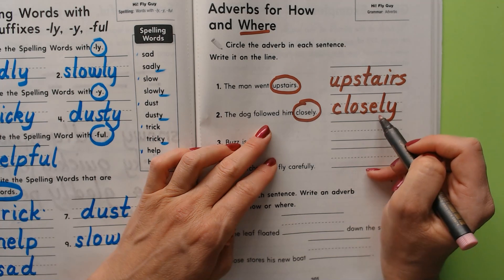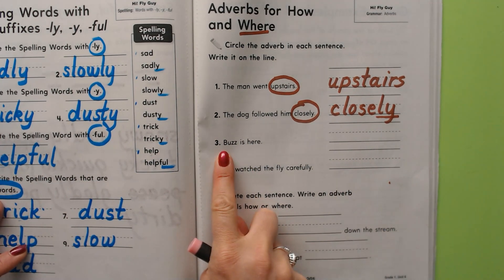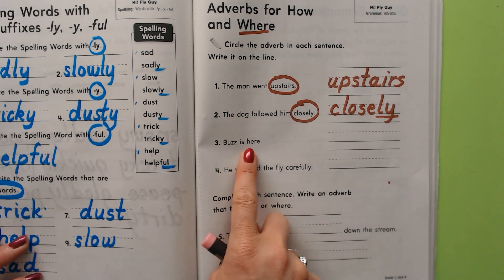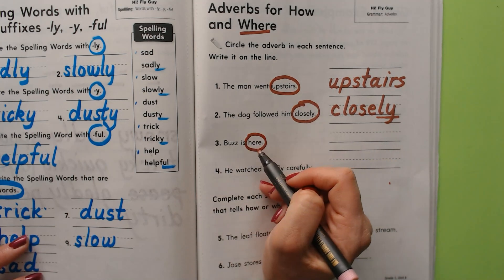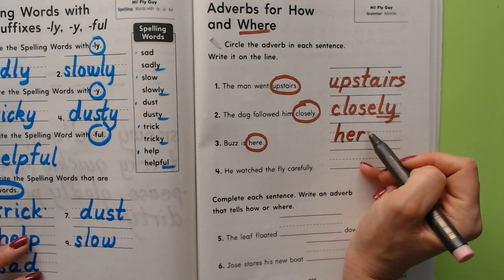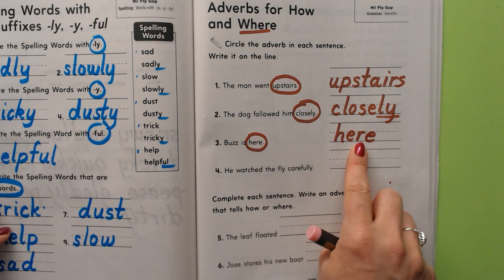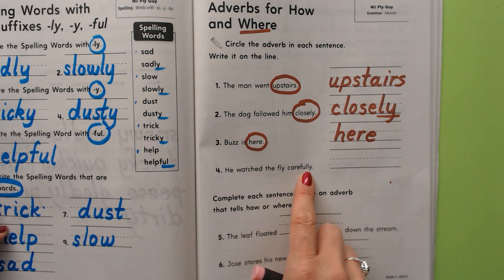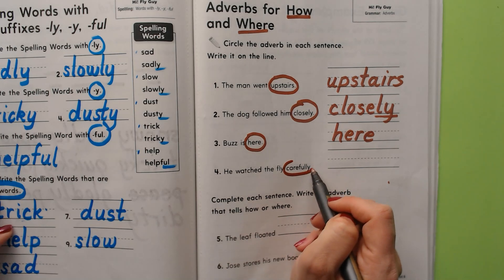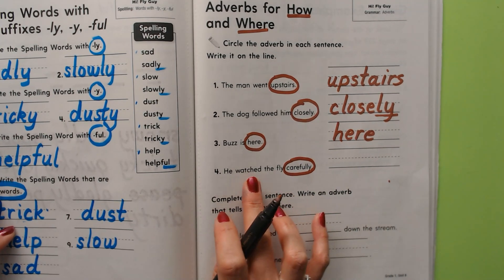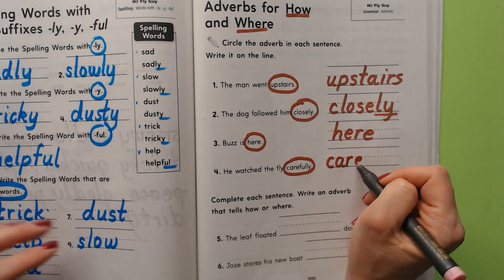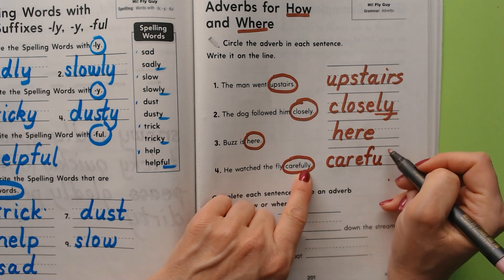Words that end with -ly are very often adverbs — just a little tip. 'Buzz is here' — where is he? Here. Circle here — it tells more about the verb, telling where. 'He watched the fly carefully' — how did he watch the fly? Carefully. It ends with -ly and tells more about the verb watched. Let's circle it and write carefully.